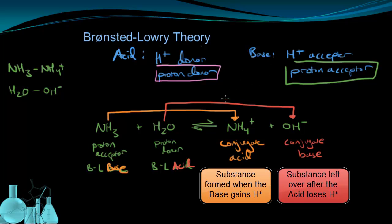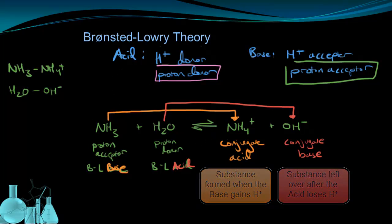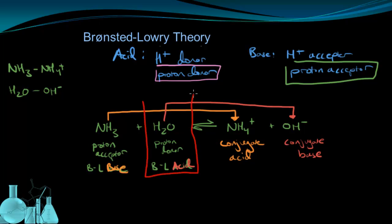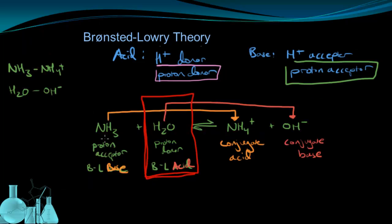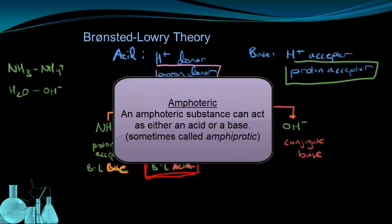We've now looked at a Bronsted-Lowry base in NH3 and a Bronsted-Lowry acid in HCl. There's one more interesting thing to point out — the role of water in both equations. In the NH3 example, when water was with a base, water acted like an acid and was labeled as a Bronsted-Lowry acid, because it gave away a proton. However, in the HCl example, water gains a proton — it gains an H+ to become hydronium — so it was a proton acceptor, making it a Bronsted-Lowry base. So in one example water acts as a base, and in the other it acts as an acid. Water is actually an example of a special substance we describe as being amphoteric — a substance that is able to act as either an acid or a base.